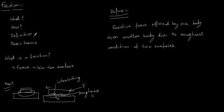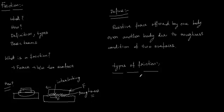Before going to the basic terms, we need to know the types of friction. There are two basic types of friction between the two surfaces of two objects. The first one is static friction and the second one is dynamic friction.